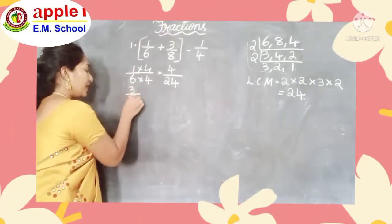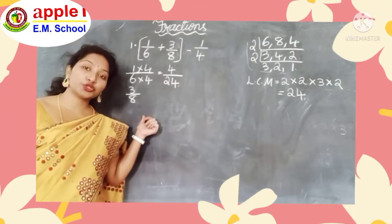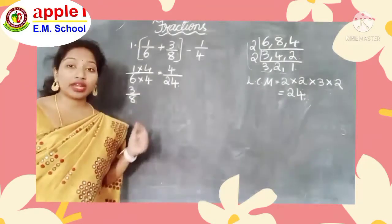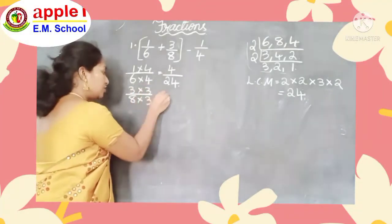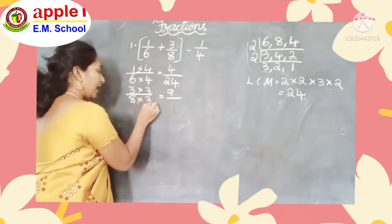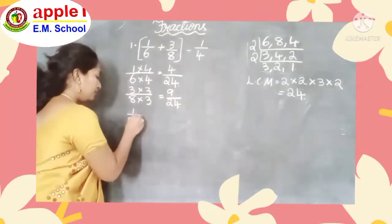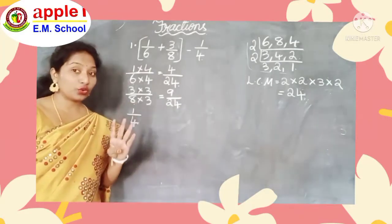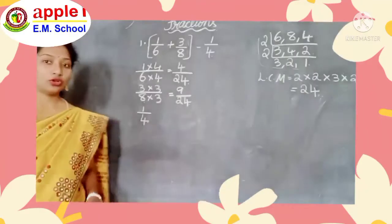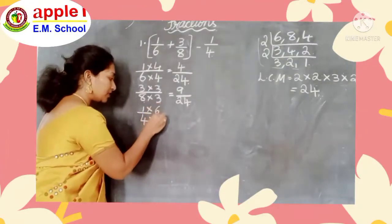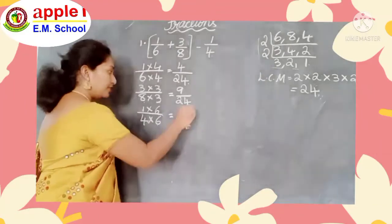Next fraction: 3 by 8. In the 8 times table, when will we get 24? 8 threes are 24. So multiply both numerator and denominator by 3: 3 into 3 by 8 into 3 gives 9 by 24. Next, take 1 by 4. In the 4 times table, 4 sixes are 24. So multiply by 6: 1 six is 6 by 4 sixes are 24, giving 6 by 24.